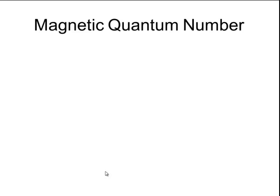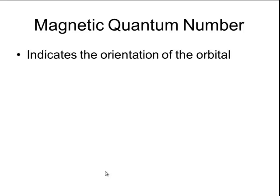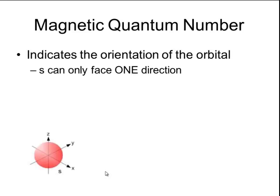The third type of quantum number is called a magnetic quantum number. And it indicates the orientation of the orbital. So it tells you which direction that orbital is pointing in three-dimensional space. An s orbital is spherical shaped. Because it's a sphere, it can only point in one direction. It doesn't matter how you rotate that sphere. It's always going to be oriented the same direction in three-dimensional space.